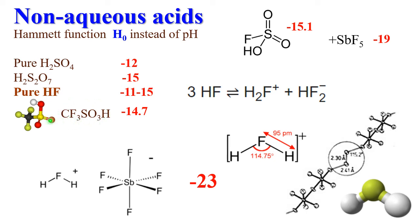Triflic acid (CF₃SO₃H) is also very strong in its pure state. Addition of antimony pentafluoride, SbF₅, makes these solutions even more strongly acidic. Chlorosulfonic acid plus SbF₅ has a Hammett function of minus 19 — it's so strong it can protonate hydrocarbons. It was named magic acid because when a candle was accidentally put in a solution of it on Christmas, it just dissolved, being protonated.